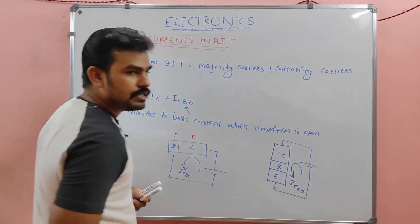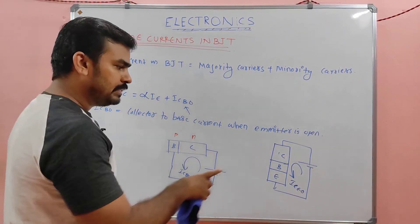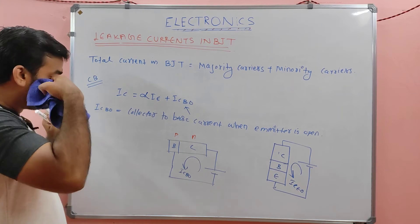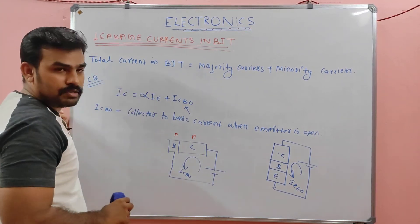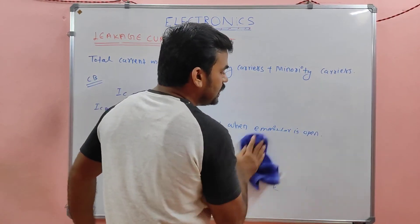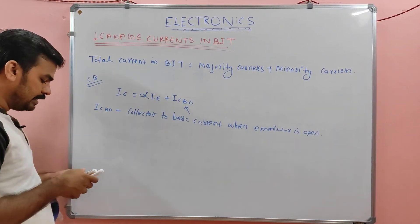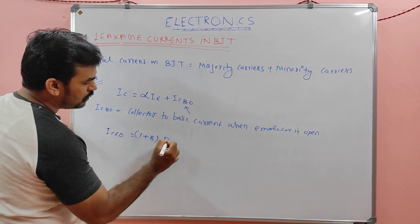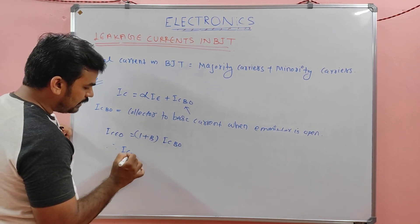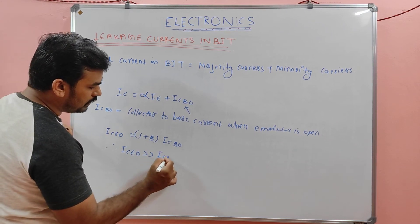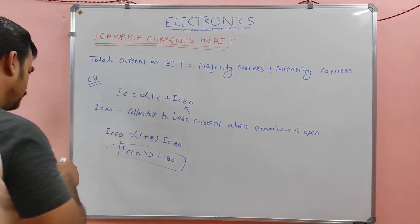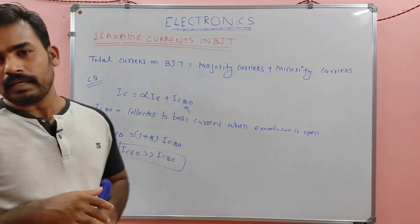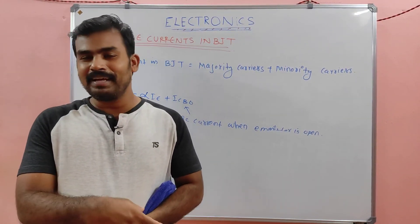The key summary: the leakage current in common base is ICBO, and in common emitter it is ICEO. The relationship between them is: ICEO = (1 + β) × ICBO. This means ICEO is very much greater than ICBO. That is an important result to note. So that's all for today — this topic will be continued tomorrow.